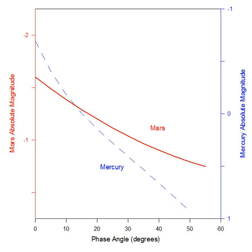The phase curve of the Earth has not been determined as accurately as those for Mercury and Venus, because its integrated brightness is difficult to measure from the surface. Instead of direct observation, Earthshine reflected from the portion of the Moon not lit by the Sun has served as a proxy. A few direct measurements of the Earth's luminosity have been obtained with the Epoxy spacecraft, which reveal a rotational light curve caused by the transit of dark oceans and bright land masses across the hemisphere.